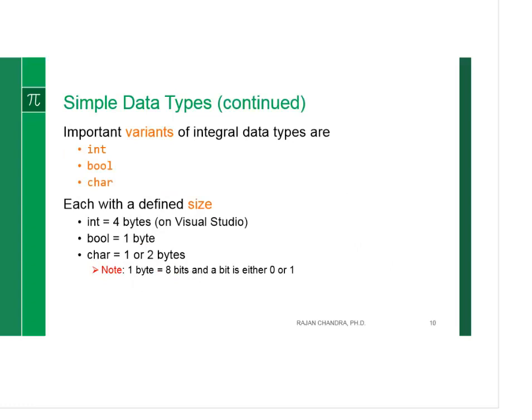Basically, the integer takes four bytes on a computer. Boolean takes one byte. Character takes one or two bytes, depending on what encoding we use. If we use ASCII, it is one byte. If we use Unicode encoding, it takes two bytes.